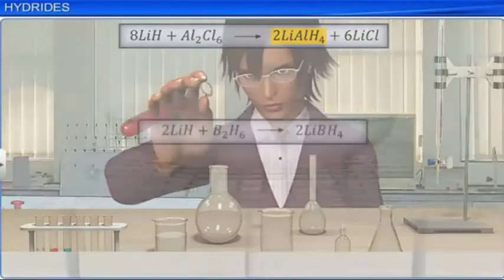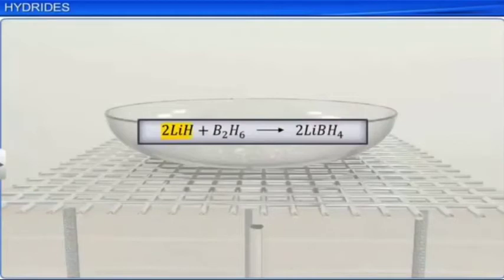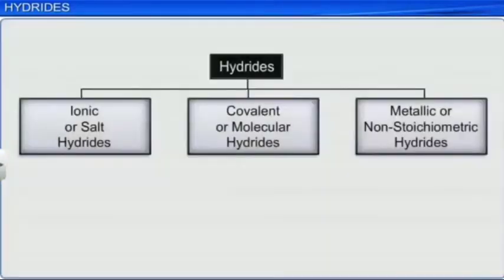The reaction that takes place is lithium hydride reacts with aluminum chloride to give lithium aluminum hydride and lithium chloride. Lithium aluminum hydride is a powerful reducing agent and used extensively in organic chemistry. Lithium hydride also reacts with boron hydride to give lithium boron hydride. The second type of hydrides are covalent or molecular hydrides.